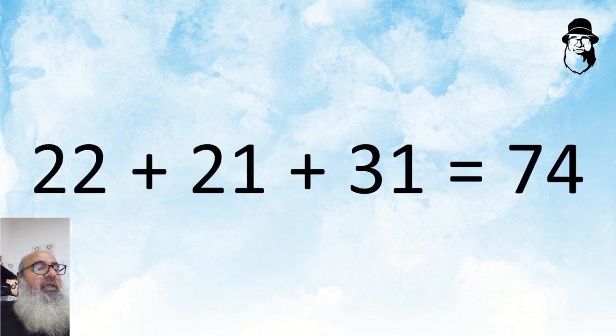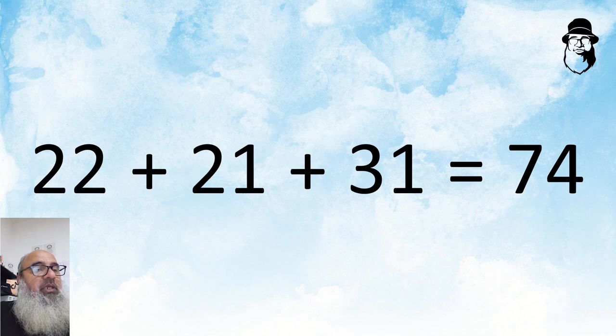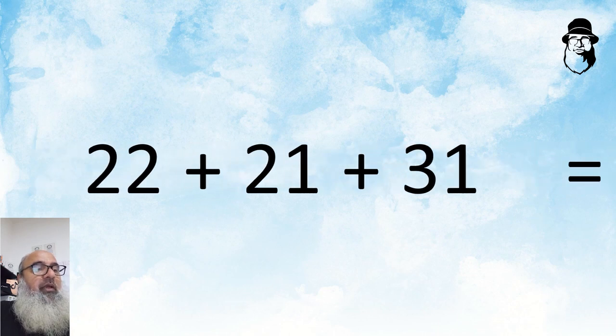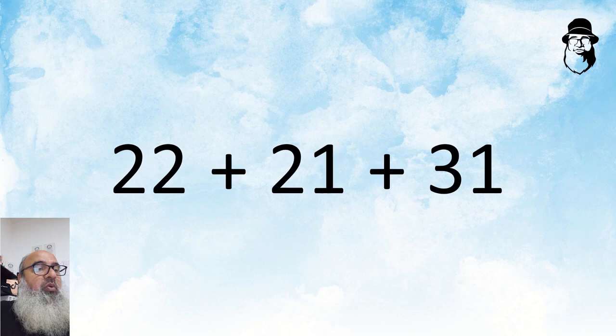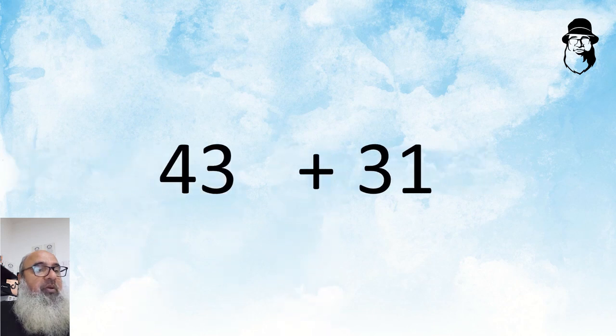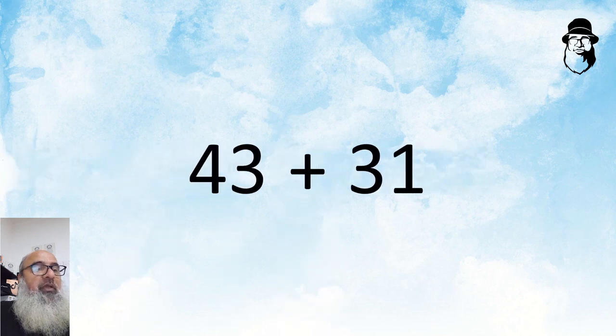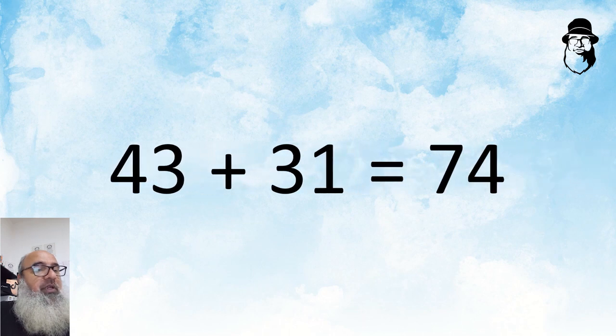And 22 plus 21 plus 31 is equal to 74. Here we can add 22 and 21 to get 43 and 43 plus 31 is 74.